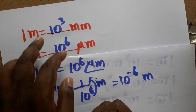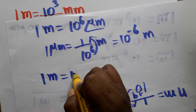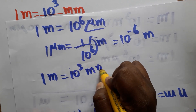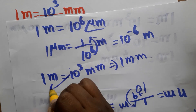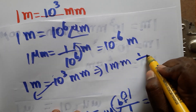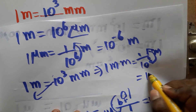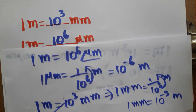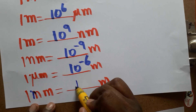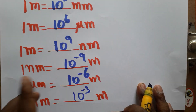Finally, 1 millimeter is equal to how many meters? We know 1 meter is 10 power 3 millimeters. So 1 millimeter equals 1 divided by 10 power 3 meters. Bringing it from the denominator to the numerator, the exponent becomes minus 3, so 1 millimeter is equal to 10 power minus 3 meters.